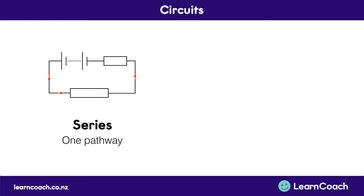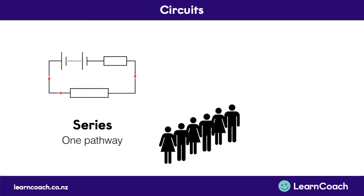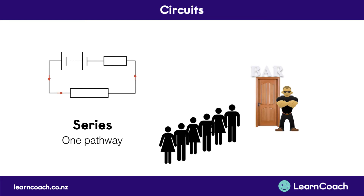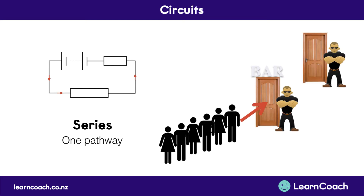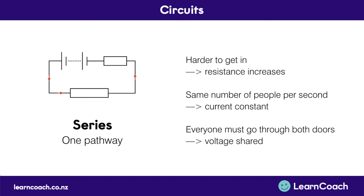Now we'll look at series in more depth. Think about a line of people wanting to get into a bar — they've got to walk through the door with the bouncer. A series circuit with two resistors is like a bar with two bouncers and two doors. The line of people will have to go through both in order to get inside, so it's harder — resistance increases. But you can get the same number of people per second into the club, so the current is constant. And everyone must go through both doors, so the voltage is shared proportionally.